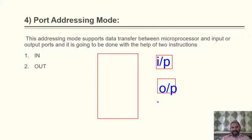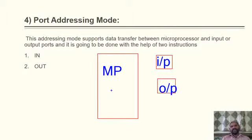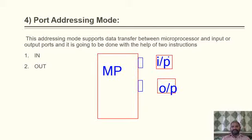Here we have the input device, the output device, and the microprocessor — let me call it MP. This entire board is the microprocessor-based board. When you interface an input device to the microprocessor-based board, you are going to have a connecting point — one for the input device and another for the output device. These two are the connecting points, which are the ports.